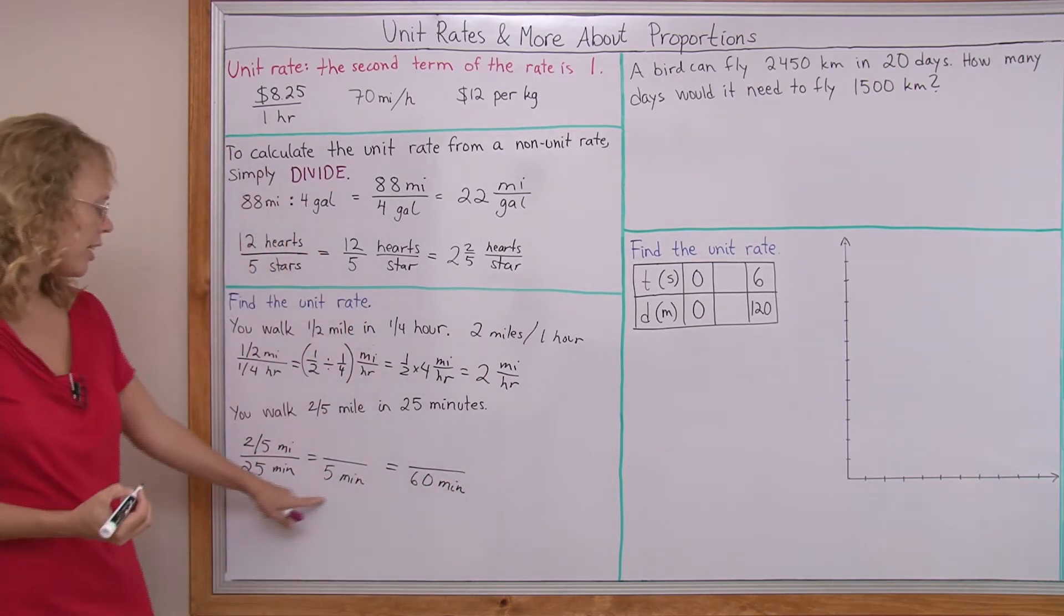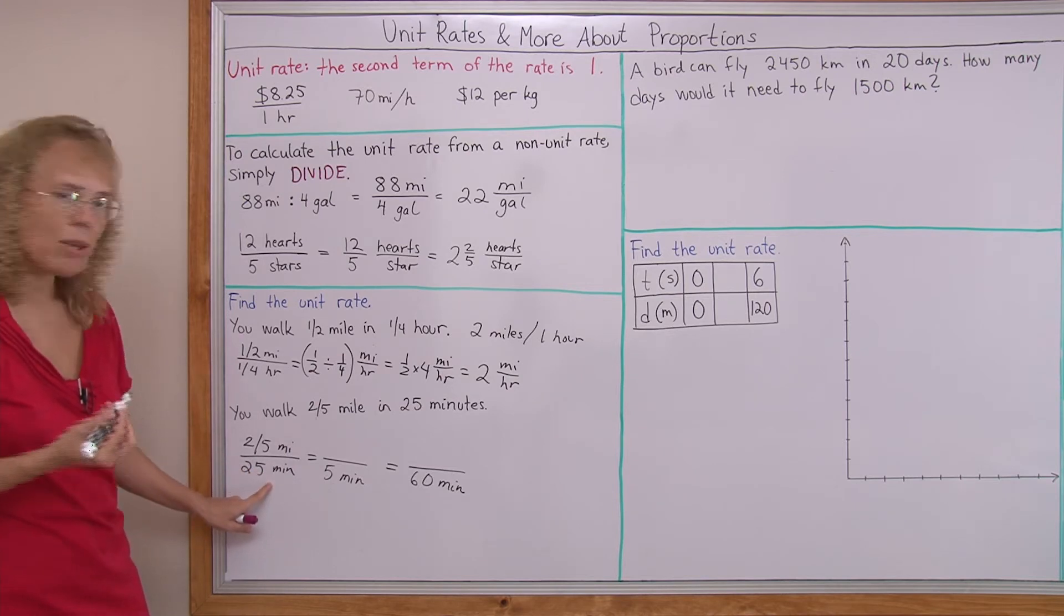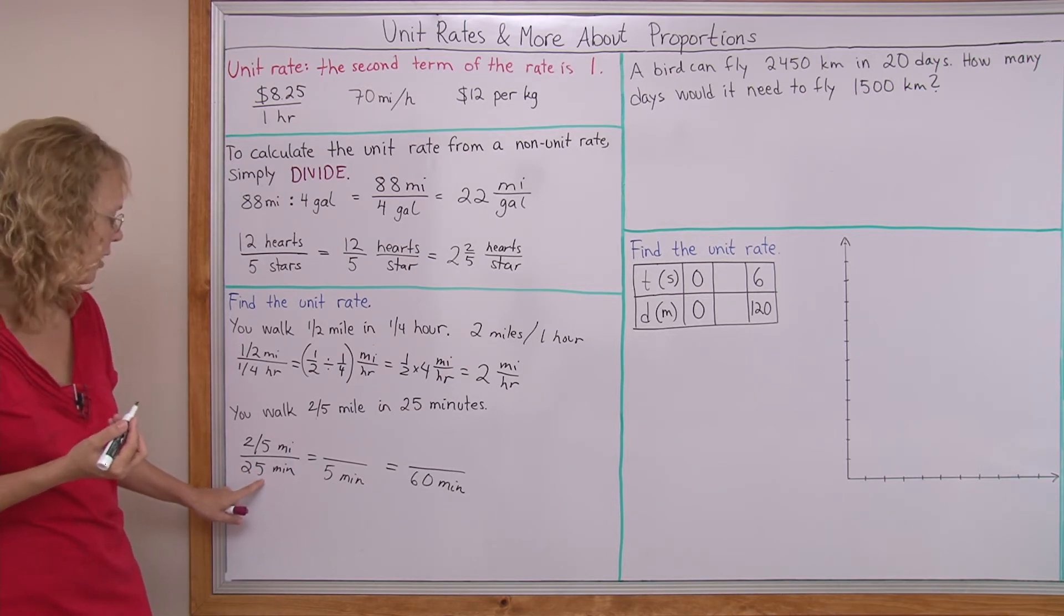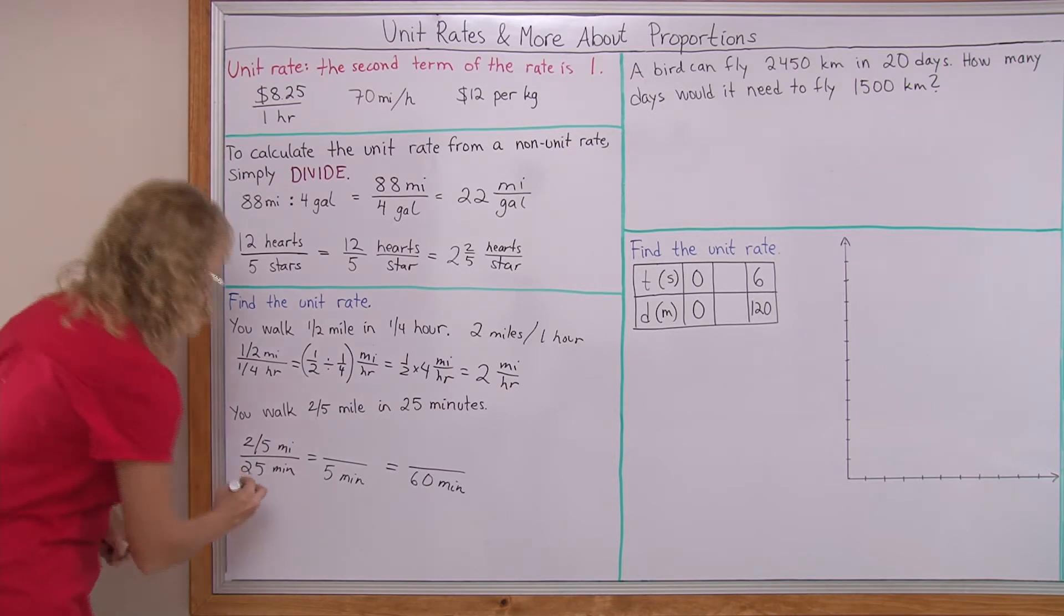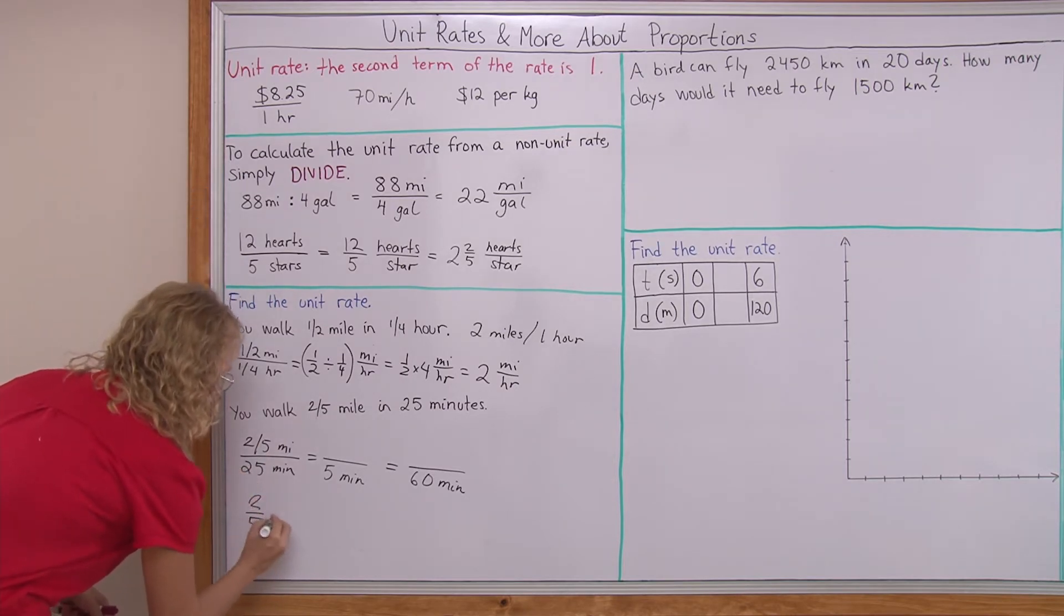To find the rate per five minutes would be just one-fifth as much, right? So I divide by five. Two-fifths divided by five. If your fraction math is not quite clear, let me divide it here.